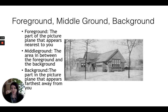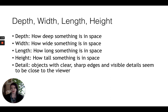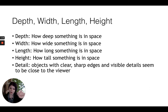Foreground, middle ground, and background are exactly what they sound like. The foreground is the part of the picture plane that appears nearest to you. The middle ground is the area between the foreground and the background. The background is the part that appears furthest away. Another thing to consider is how we perceive detail and sharpness: objects with clear, sharp edges and visible details seem closer to the viewer, while objects that are hazier and less detailed seem further away.